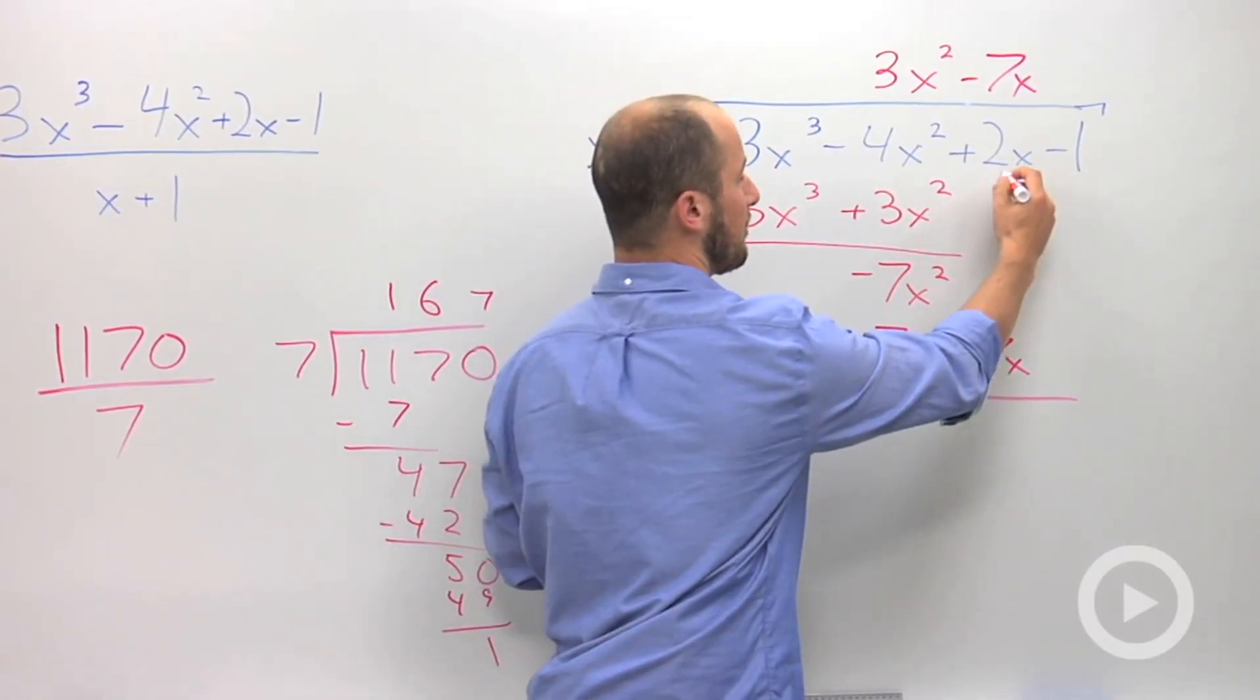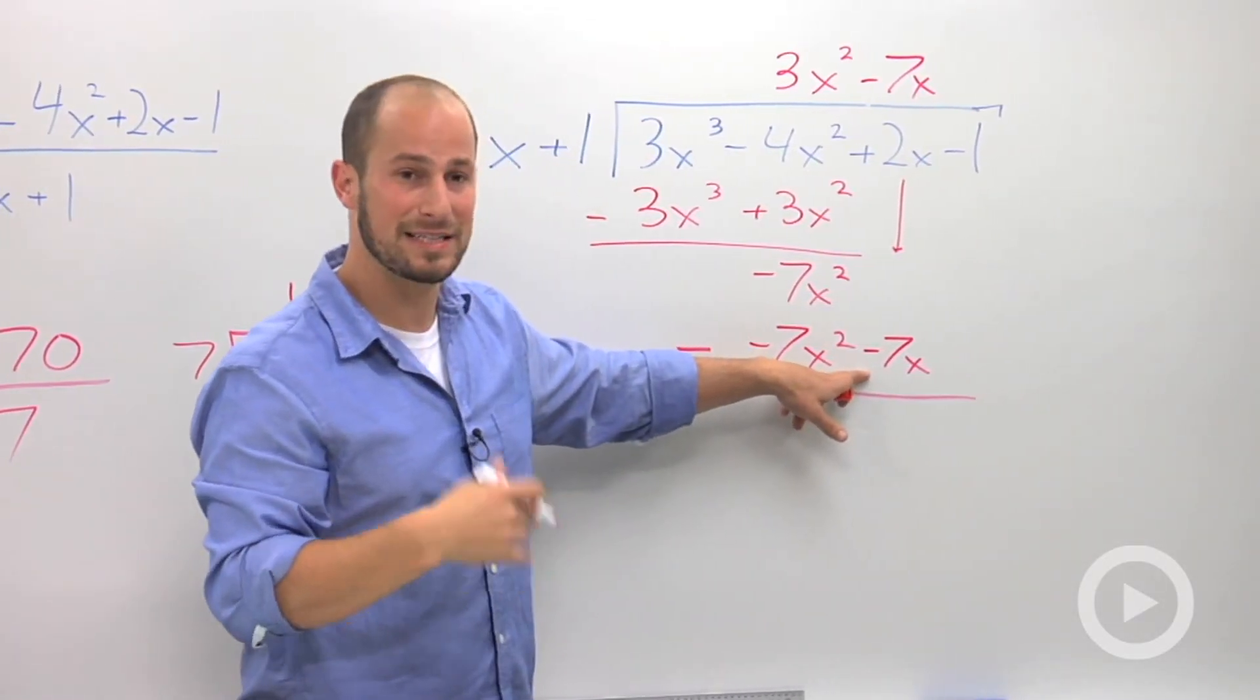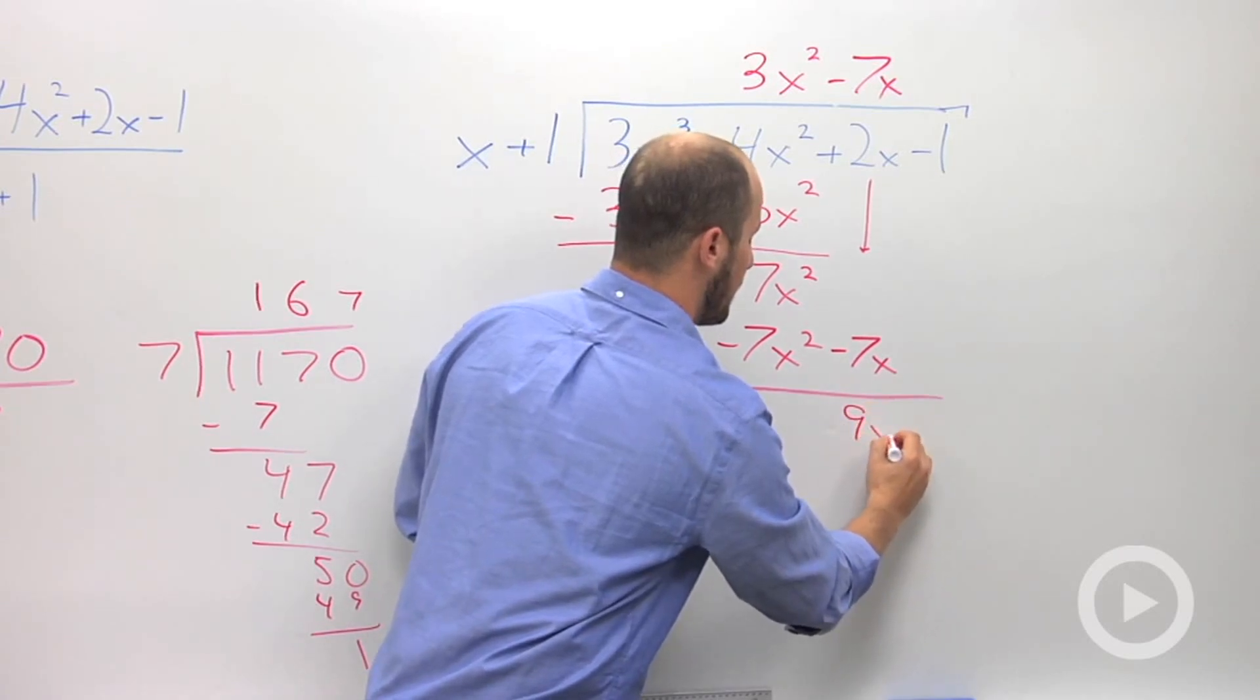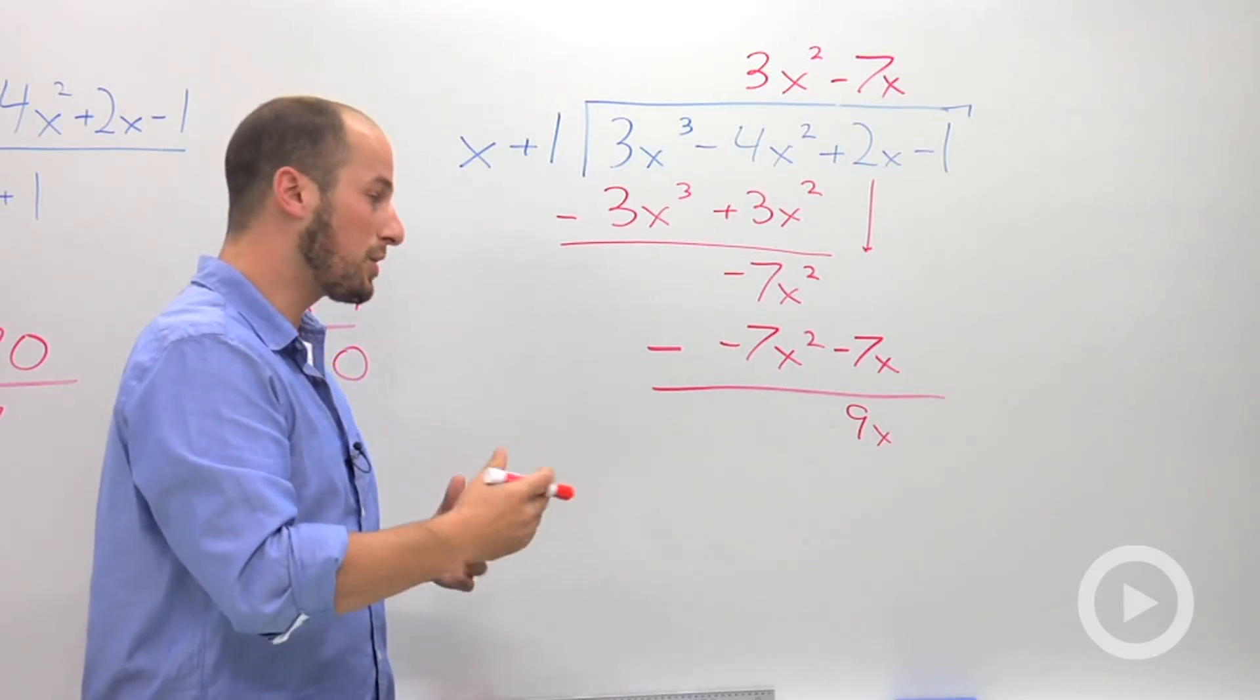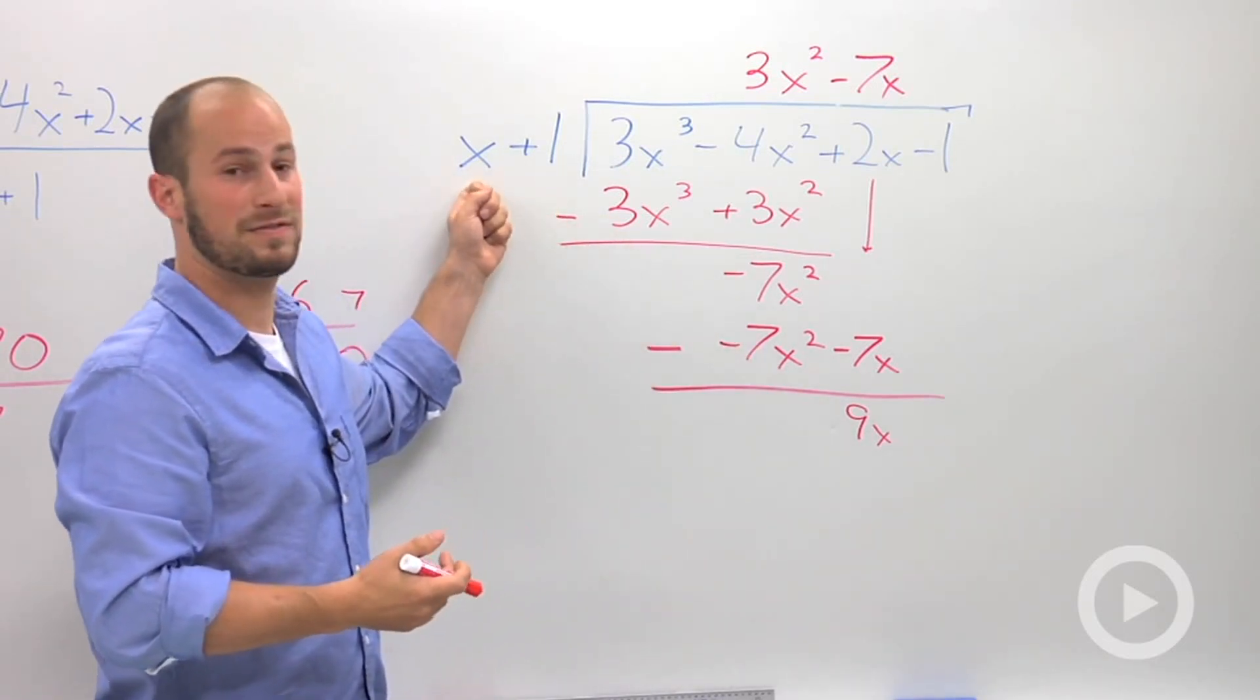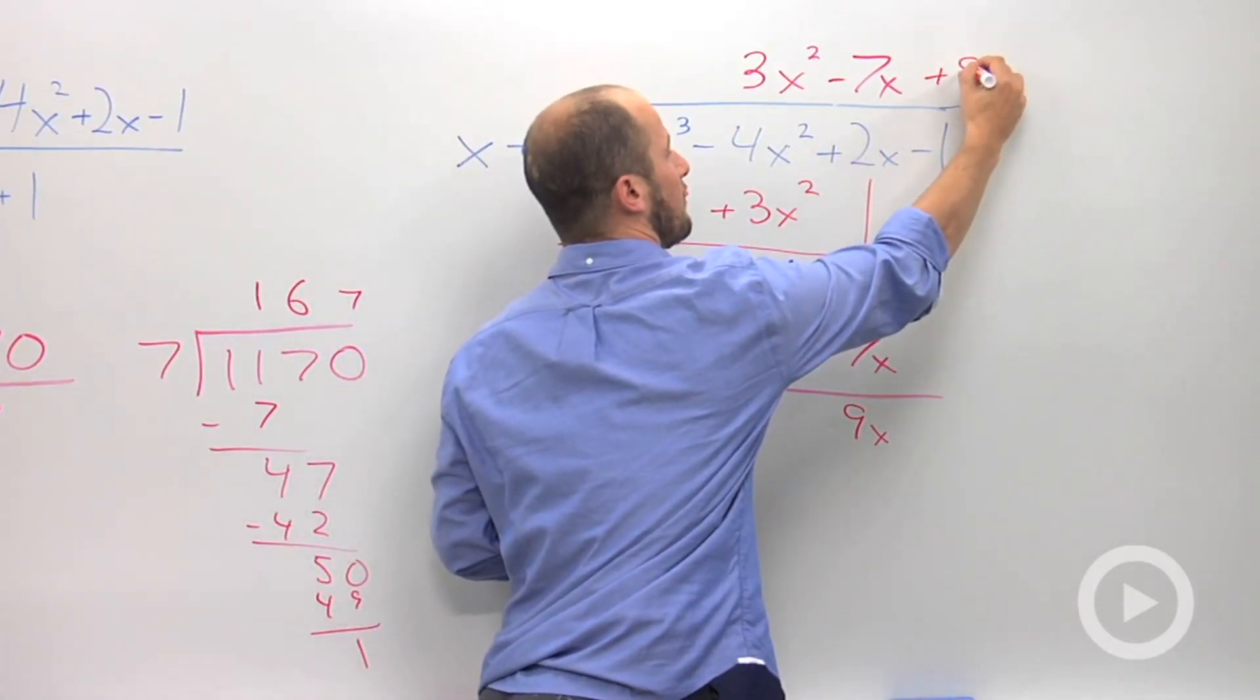And then we still have this 2 up here. So it's 2x minus negative 7x, 2x plus 7x, which turns into 9x. And again, we can bring this 1 down if we want. We don't need to, just remember it's there. So, this 9x is the last thing we need to get rid of. In order to get 9x from an x, we need a 9 plus 9.